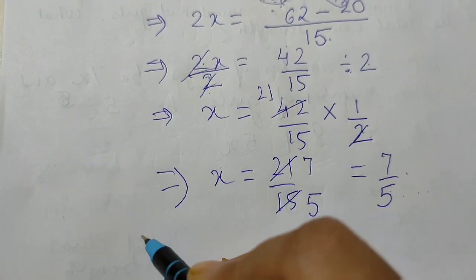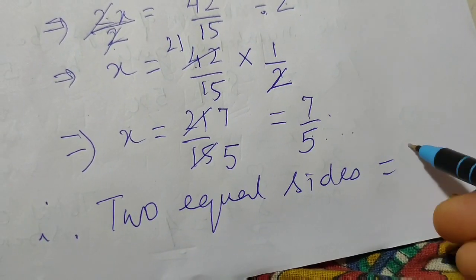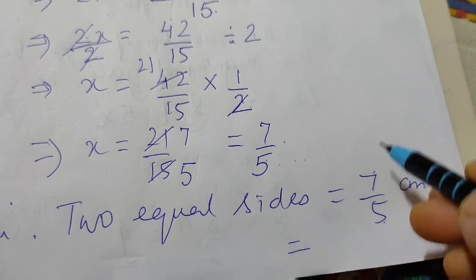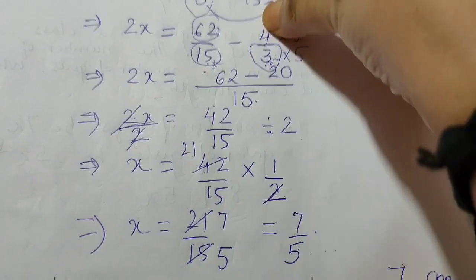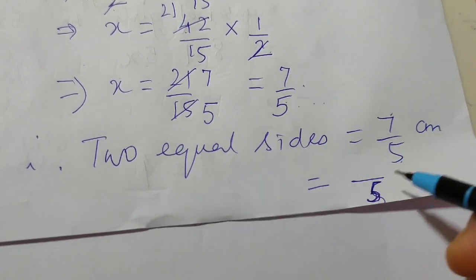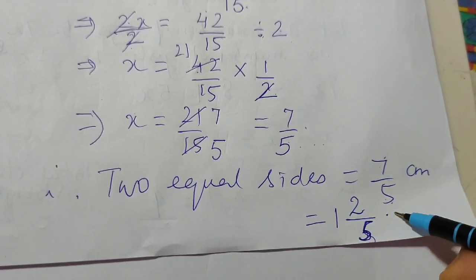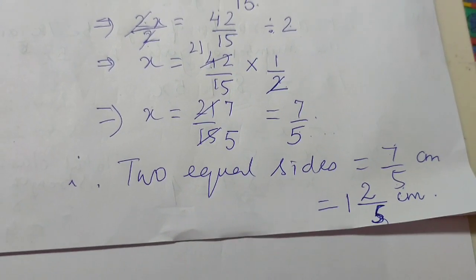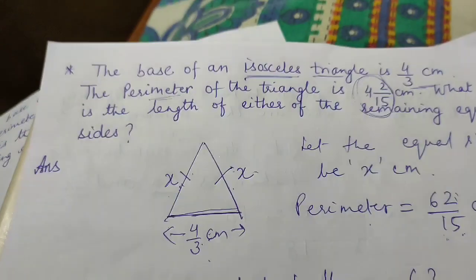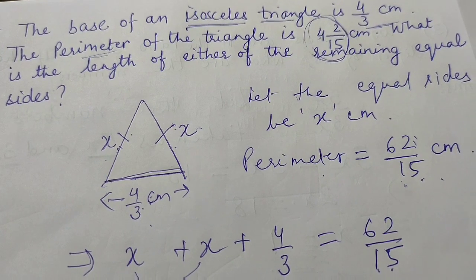Therefore the two equal sides of the isosceles triangle are 7 upon 5 centimeters each. You can also write this in mixed form. These are all questions taken from exercise 2.2 — try more examples from exercise 2.2 on your own.